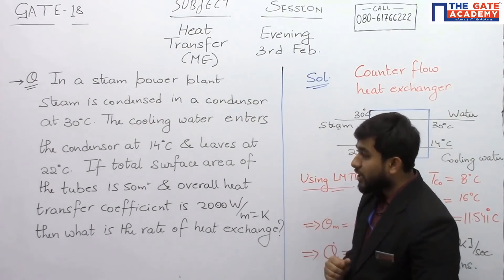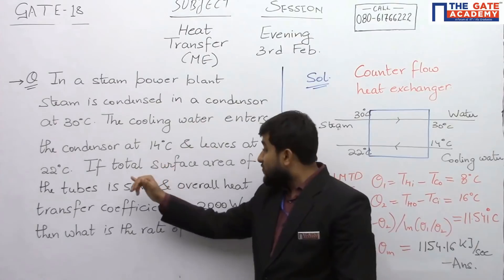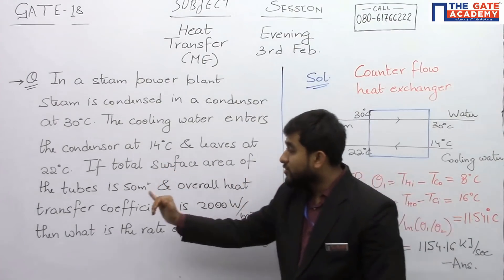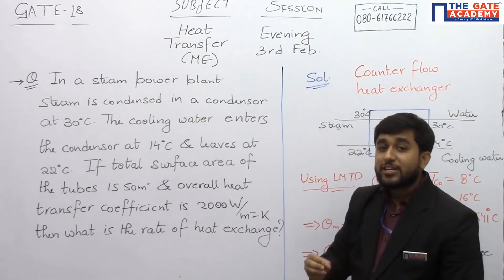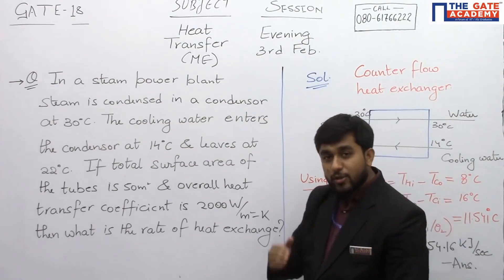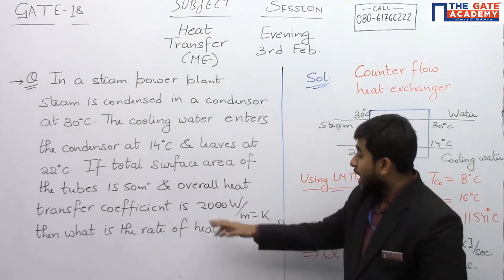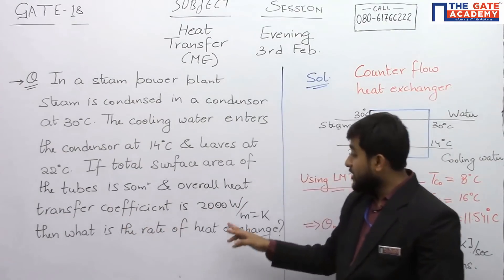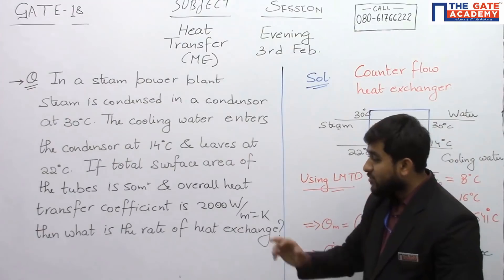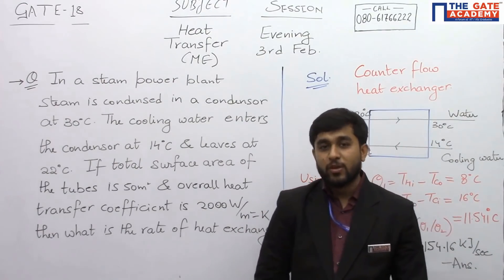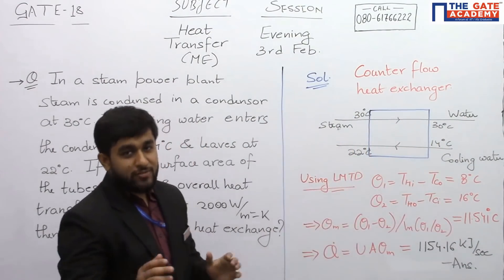It says if the total surface area of the tubes is 50 meter square, so basically this is the interface, that is the heat exchange area between the hot and cold fluid, and overall heat transfer coefficient is 2000 watt per meter square kelvin, then what is the rate of heat exchange? Let us see how to solve this question.